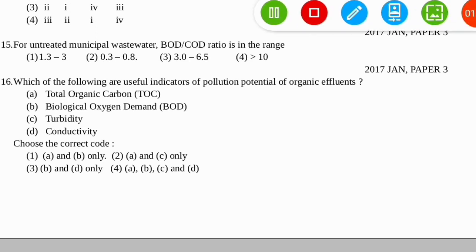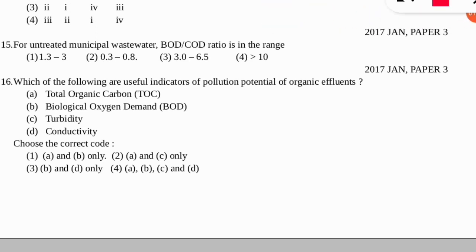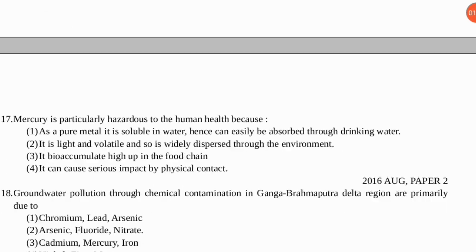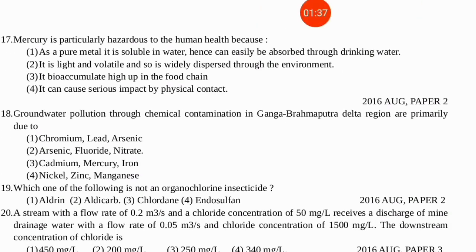The next question: which of the following parameters are useful indicators of pollution potential of organic effluents? The correct option is A — total organic carbon and biological oxygen demand determine the pollution potential of organic effluents, while turbidity and conductivity are not included. The following question about mercury being hazardous is repeated — the correct option is number three, as it bioaccumulates in the food chain.